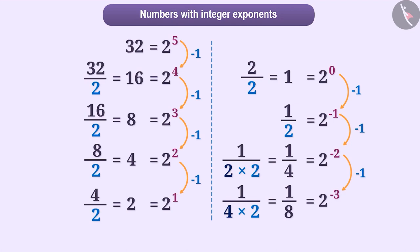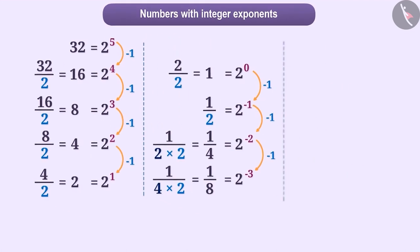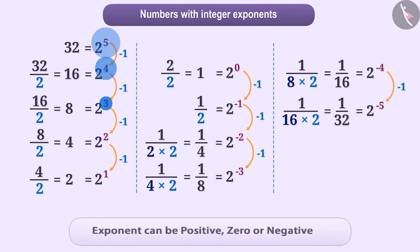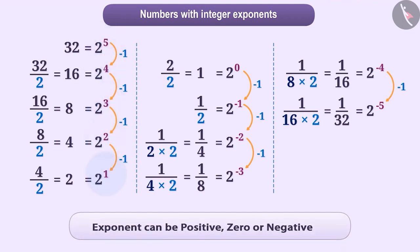In this way, by following the pattern, we will get 1 upon 16 is equal to 2 to the power minus 4, 1 upon 32 is equal to 2 to the power minus 5, and so on. As you can see, the exponent can be positive, it can be 0, and it can also be negative.